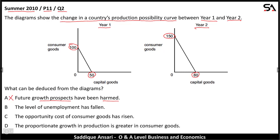Option B: the level of unemployment has fallen. For both production possibility curves there is full employment of resources, so the level of unemployment has not fallen. B cannot be the answer. Option C: the opportunity cost of consumer goods has risen. Let's calculate the opportunity cost.